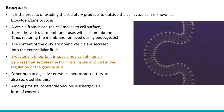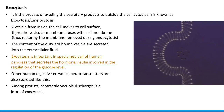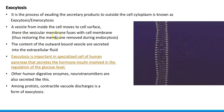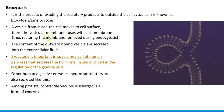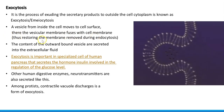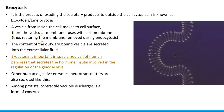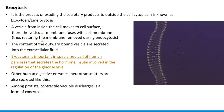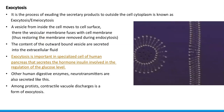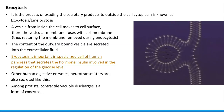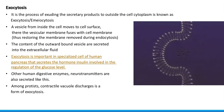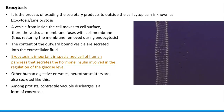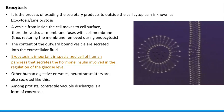Looking at the right-hand side, the same thing has happened there. The vesicular membrane fuses with the cell membrane, thus restoring the membrane which was previously removed by the process of endocytosis. The content of the outward-bound vesicle are secreted into the outside environment, or into the extracellular environment.